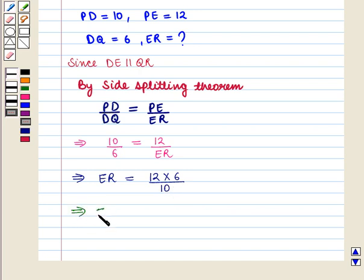On solving, we get ER is equal to 72 by 10, that is equal to 7.2.